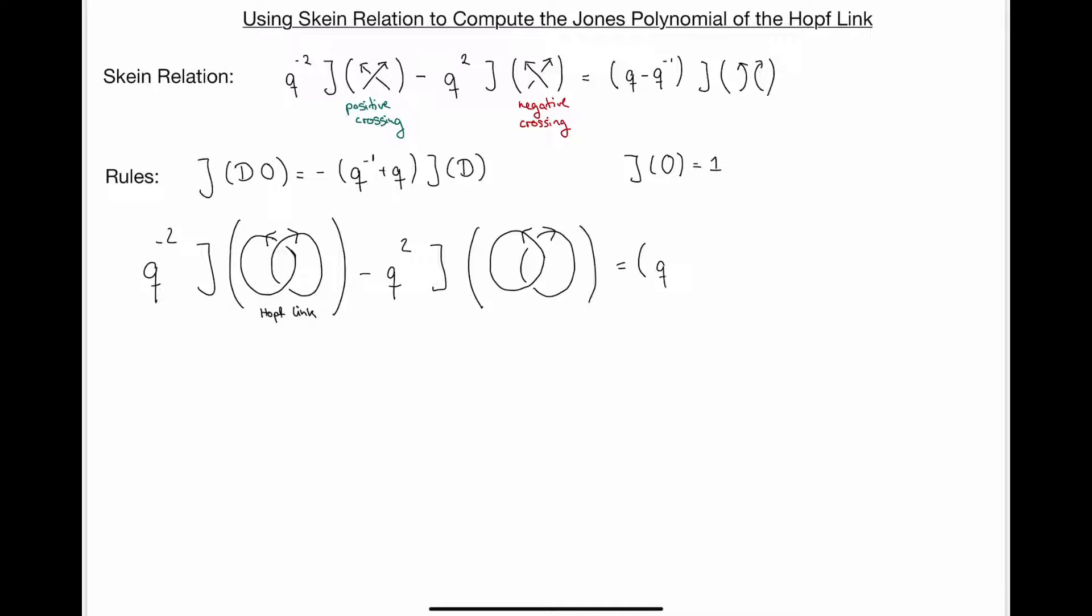And then on the right-hand side, I get q minus q inverse times the Jones polynomial of what? Well, now I will go along the right-hand side, and instead of crossing, I'll go back. So I'll pretty much get this up here and the orientation will be this.